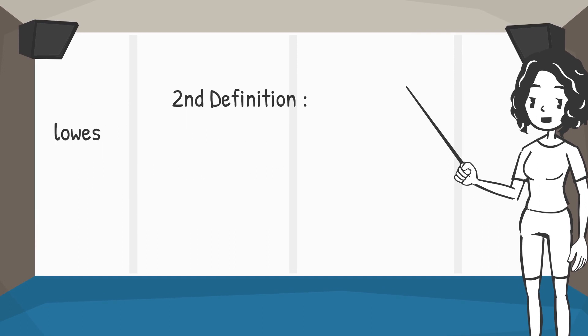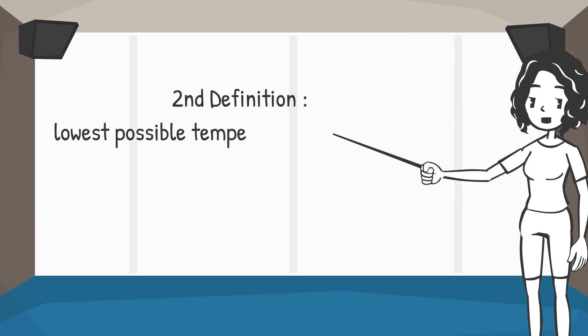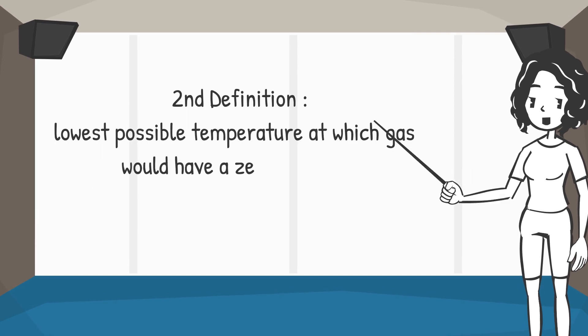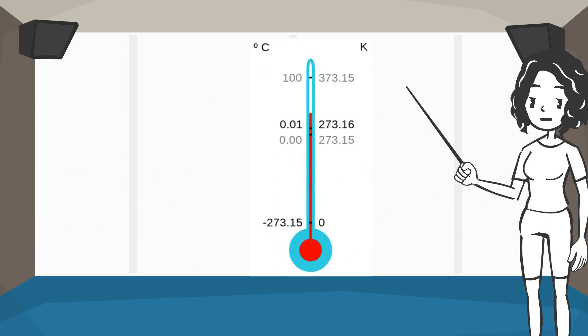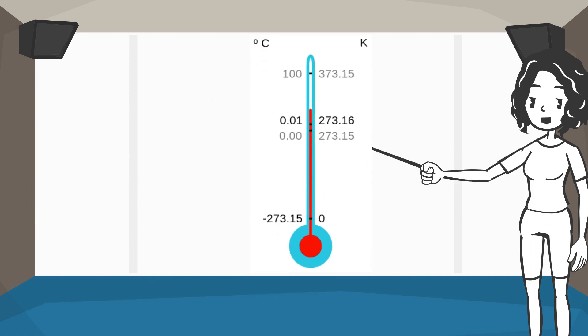Second definition: the lowest possible temperature at which a gas would have zero volume. You can easily understand by this diagram.